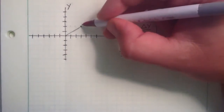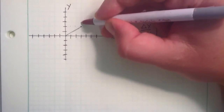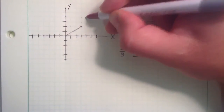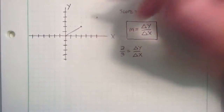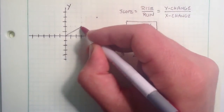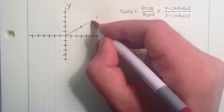We could do that one more time and count up 2 in the y and 3 in the x direction, and we extend our line a little further.